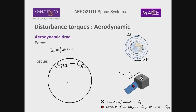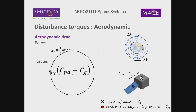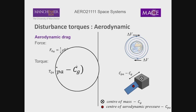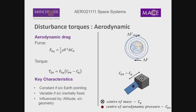Key characteristics: aerodynamic drag torque tends to be constant if the spacecraft is Earth-pointing, and variable if the spacecraft is inertially fixed — pointing at some distant star. It's influenced by altitude, because that determines atmospheric density, and by spacecraft geometry.